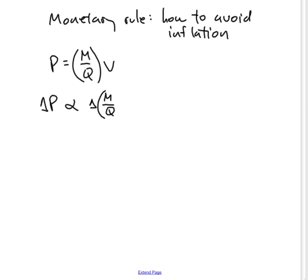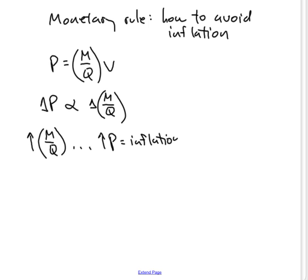Or to put it another way, an increase in M over Q in the long run will cause inflation, assuming velocity stays constant. If M over Q stays constant, a stable ratio of M to Q will mean stable prices.